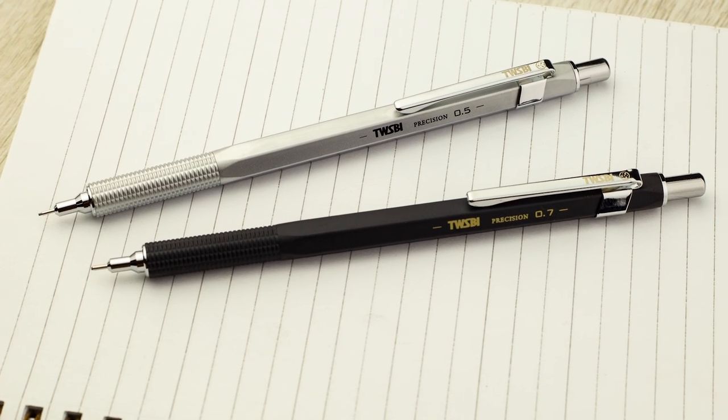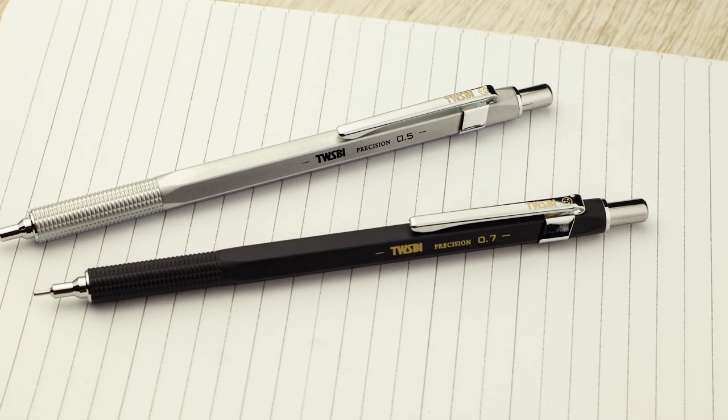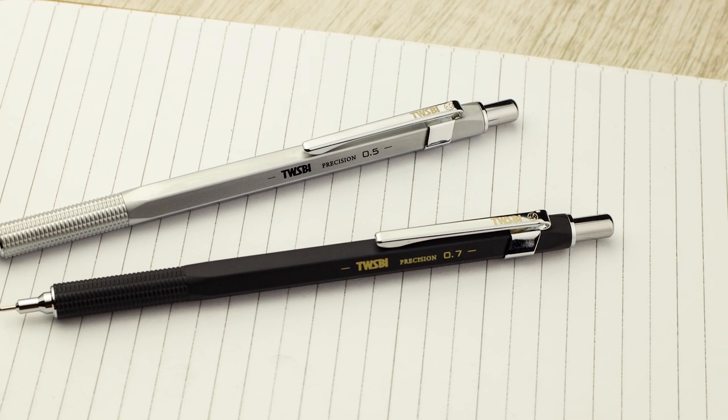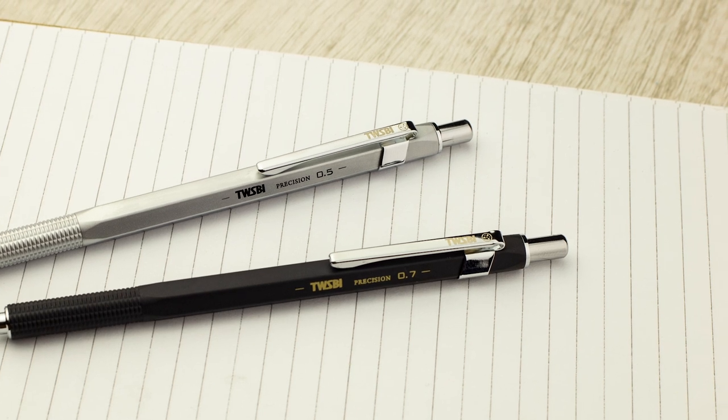They're great. They're really nice. Beautiful clip, very Caran d'Ache on the clip. And so they come in black and silver, 0.5 and 0.7. They come in a cute little box. They have a huge amount of erasers and a whole thing of lead. No wrench. There's no wrench. You're not taking your pencil apart before you use it.